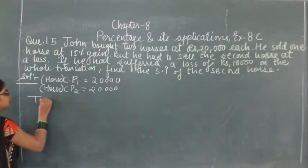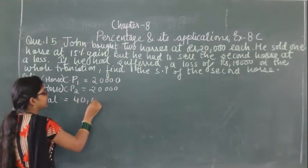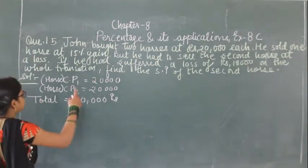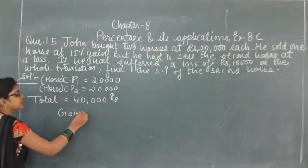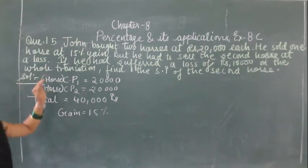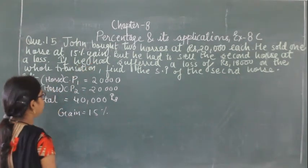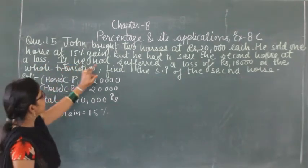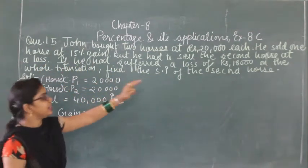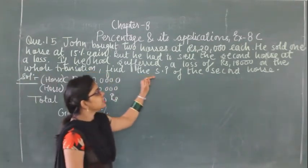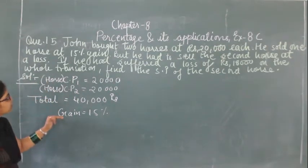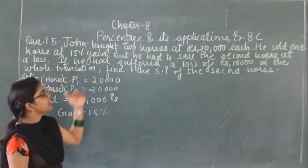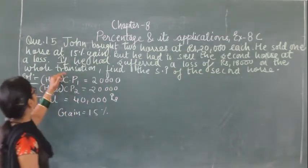He sold one horse at 15% gain. He suffered a loss of ₹18,000 on the whole transaction. We need to find the selling price of the second horse.